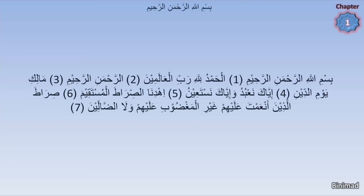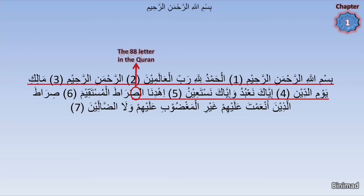To start decoding the mathematical code of the letter Saad, we go to the start of the Quran — chapter 1, which in our previous video we saw some of its amazing mathematics. From the very start of the Quran, the first appearance of the letter Saad is in chapter 1, and counting from the start of the Quran, it is the 88th letter. From that first appearance, the code for this letter becomes strongly connected to the number 88.